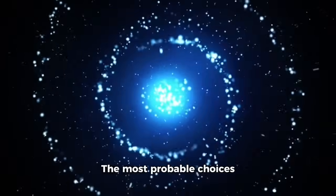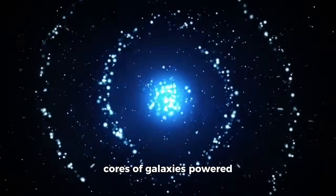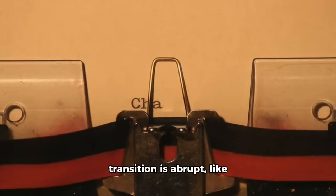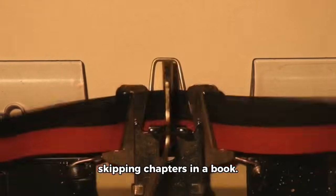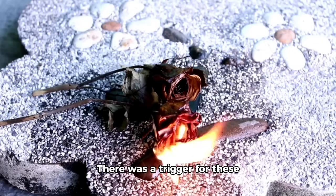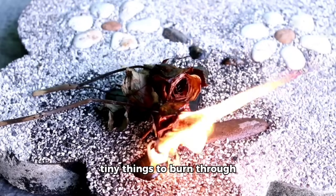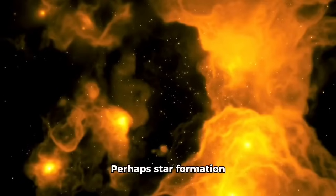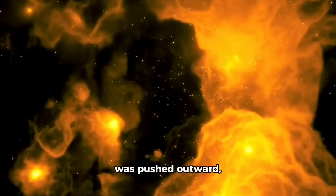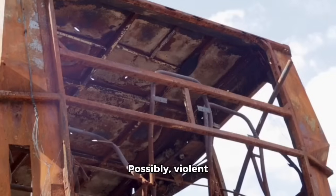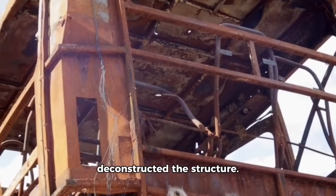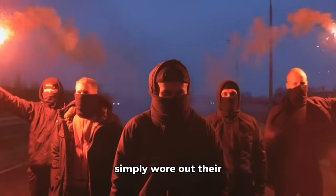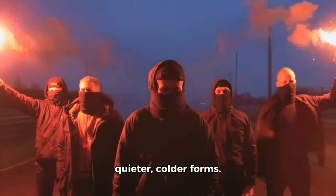The most probable choices are quasars, brilliant cores of galaxies powered by black holes. However, even that transition is abrupt, like skipping chapters in a book. There was a trigger for these tiny things to burn through their dusty cocoons, revealing and reshaping their luminous cores and galaxies. Perhaps star formation was pushed outward, thinning the gas. Possibly, violent mergers deconstructed the structure. Or perhaps the objects simply wore out their fuel, collapsing into quieter, colder forms.